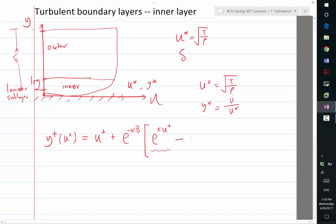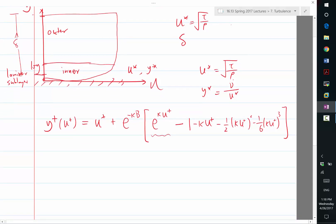In the intermediate region, there is a polynomial correction term. This is Spalding's contribution—a set of polynomials that fits the intermediate region between the laminar sub-layer and the log layer.